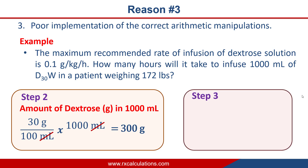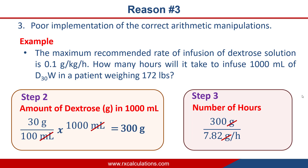Step three: determine the number of hours. Take the amount of dextrose — 300 grams — and divide by the rate of infusion of 7.82 g/hr. The grams cancel, the hours flip to the numerator, giving 38.36 hours. A common error here is dividing 7.82 by 300 instead of the other way around, producing a decimal fraction and a completely wrong answer. That was reason number three: poor implementation of the correct arithmetic manipulation.